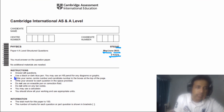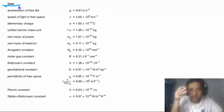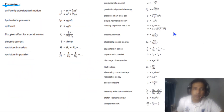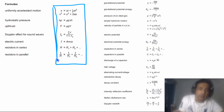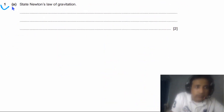This is the May 2023 theory paper for variant 2. Total time for this exam is two hours and you need to answer all questions. Total marks for this paper is 100. On the second page some important data and formulae are given — AS physics formulae on one side and A2 physics formulae on the other.